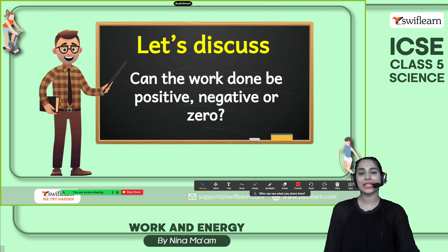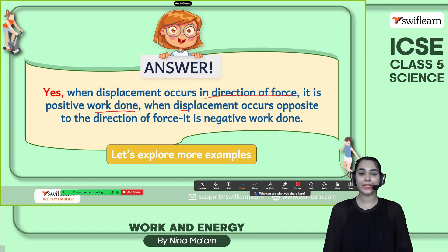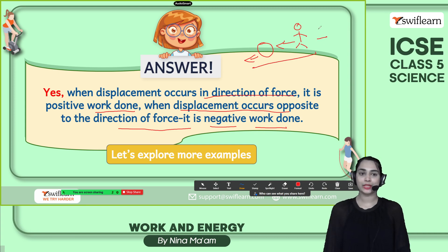Let's discuss: can work done be positive, negative, or zero? When displacement occurs in the direction of the force, it is positive work done. When displacement occurs in the opposite direction to the force, it is negative work done. For example, the boy kicked the ball — he applied force in one direction and the ball moved in the same direction. That is positive work.